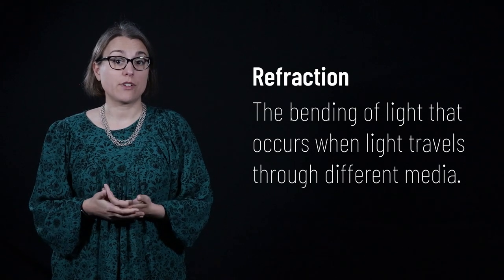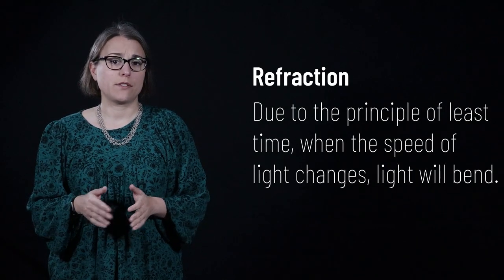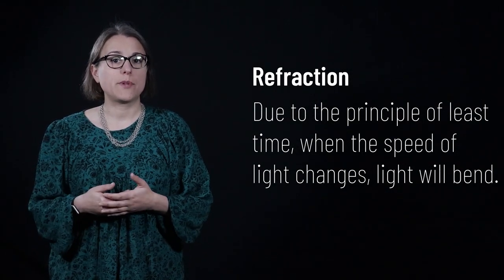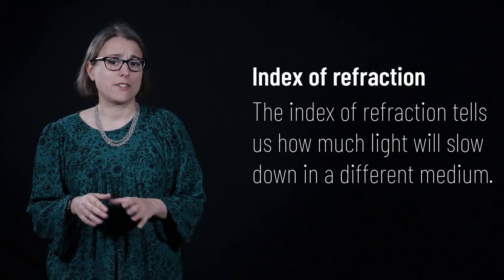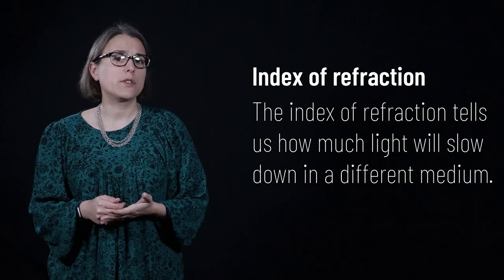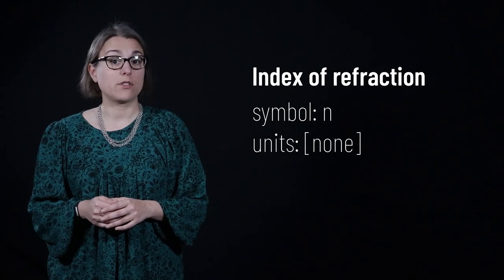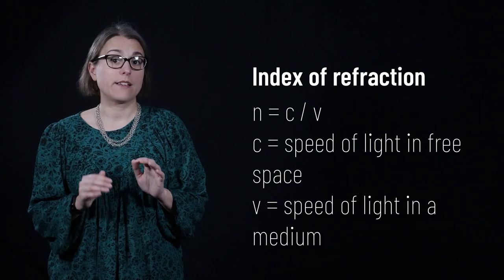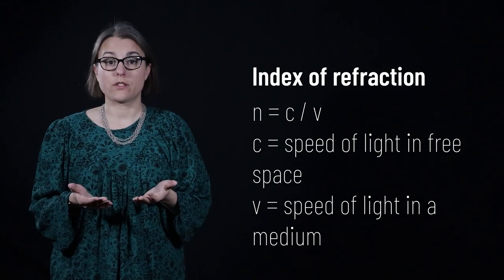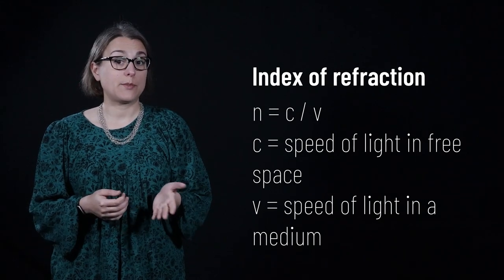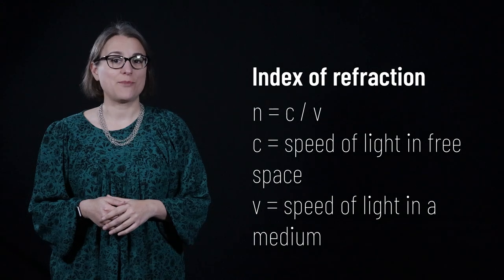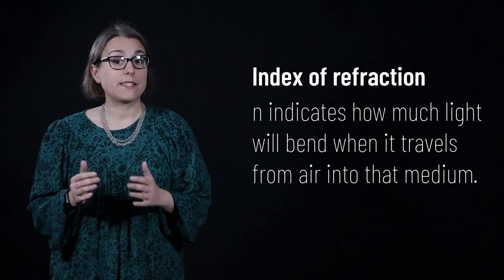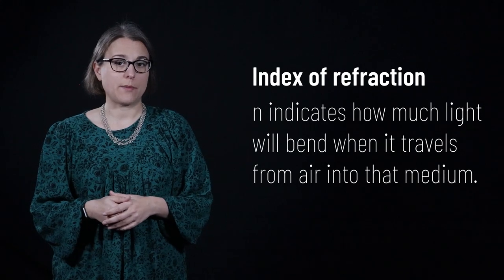Refraction is a bending of light that occurs when light travels through different media. Because of the principle of least time, light will bend when it travels from air into some type of medium such as water or plastic, where the speed of light is slower than in free space. The extent to which the speed of light slows down is known as the index of refraction, symbolized by the lowercase letter N. N equals C divided by V, where C is the speed of light in free space — 3 times 10 to the 8 meters per second — and V is the speed of light in that particular medium.